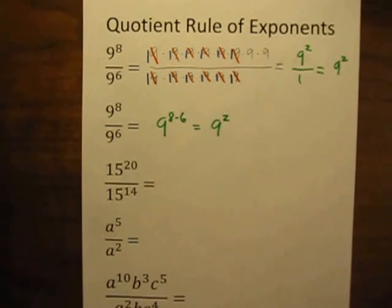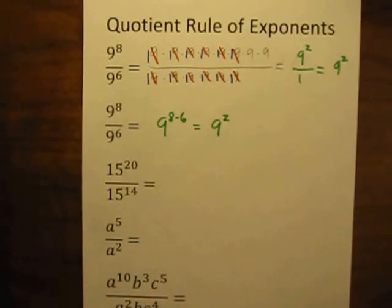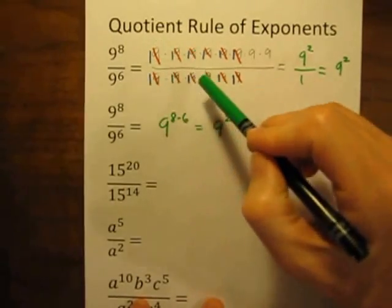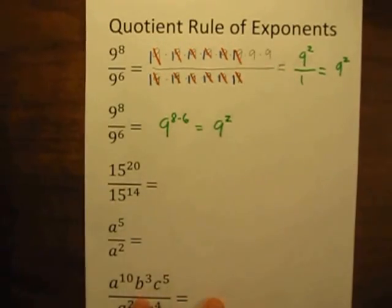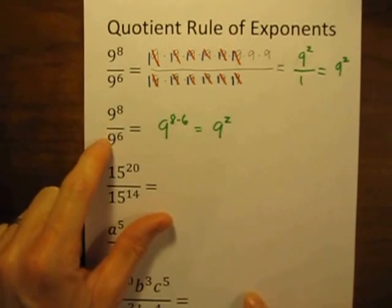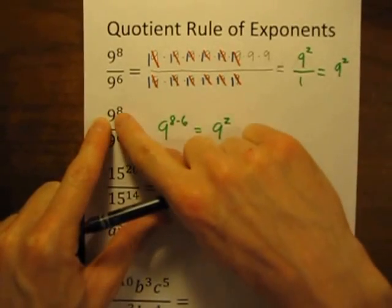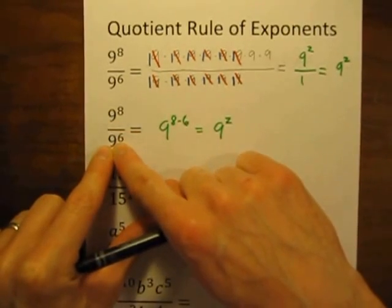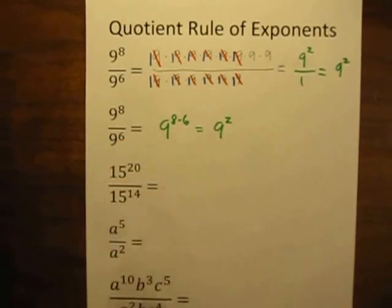Once you know that rule, it becomes much quicker and easier to do these problems. I wanted to show you why this works — I don't like just memorizing a rule without knowing why. These pairs are canceling out, leaving us with fewer nines, so we do subtraction. Another thing to remember: in order to use the quotient rule, the bases have to be the same. If the base in the numerator is 9, the base in the denominator also has to be 9. If the bases are different, you can't use the rule.